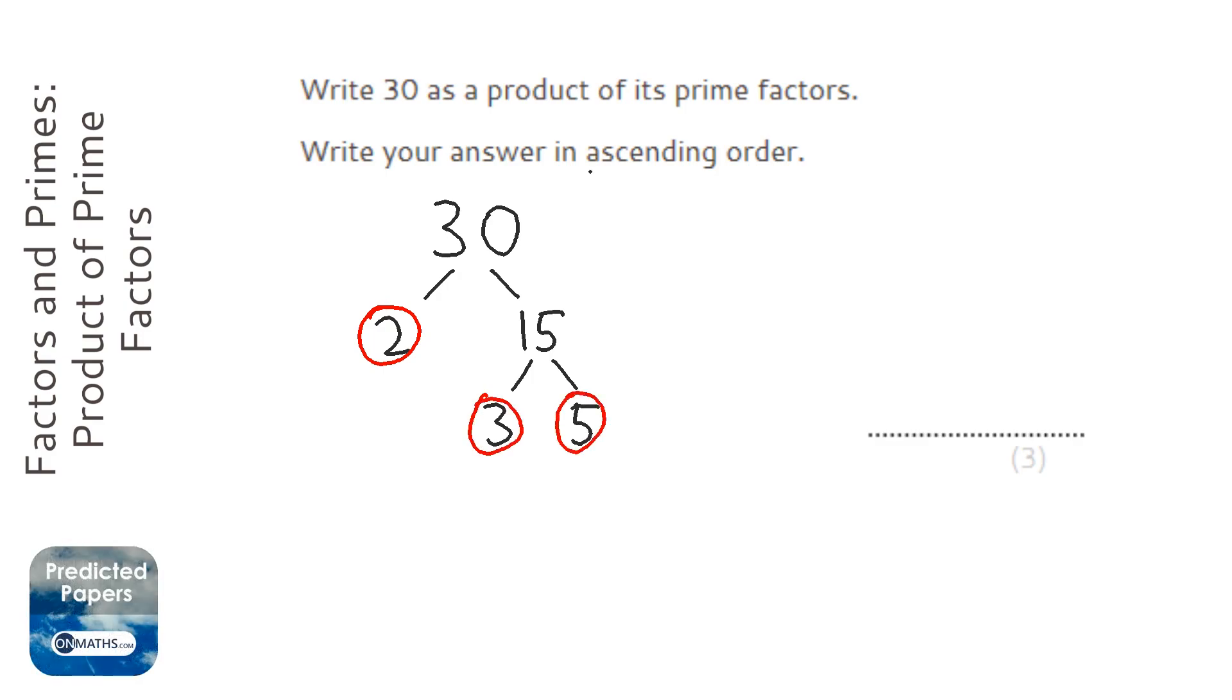Now, it says it wants it in ascending order, which means smallest to biggest, and the way we write this, the word product means times, so you write down the numbers but with a times sign in between each.